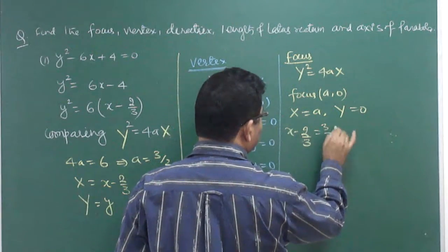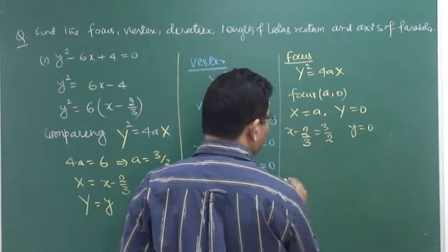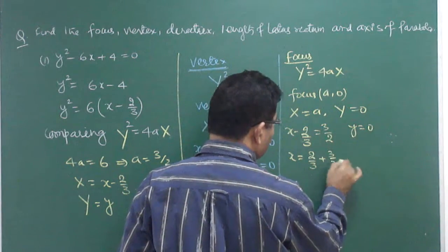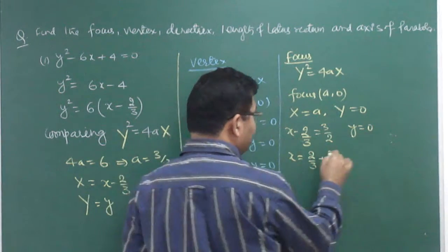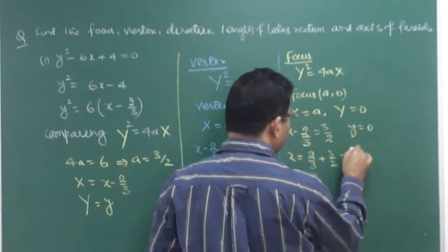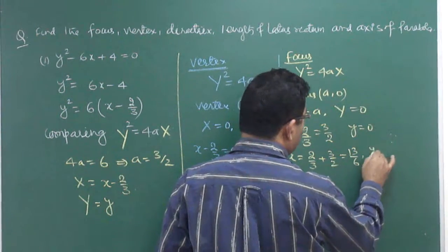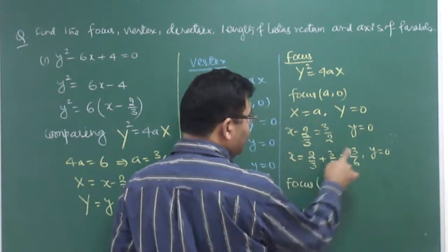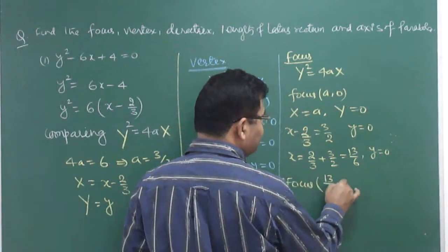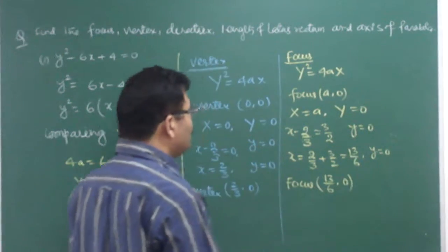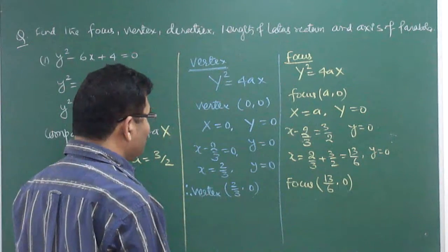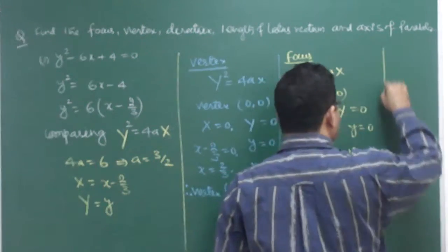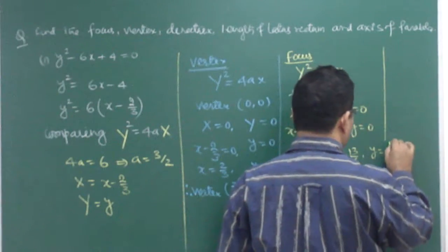With a = 3/2 and X = x - 2/3 = a = 3/2, we get x = 3/2 + 2/3 = 13/6. So the real focus is at (13/6, 0).